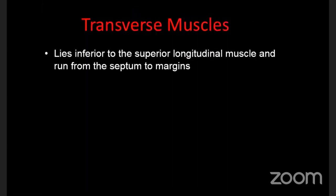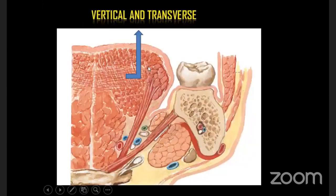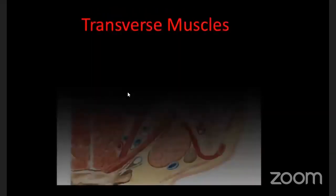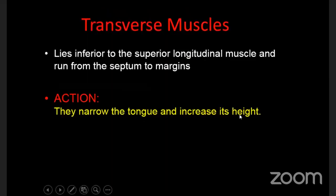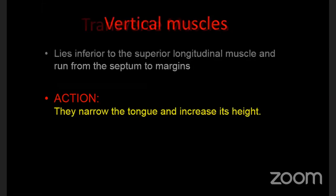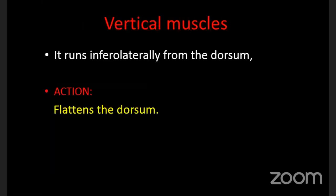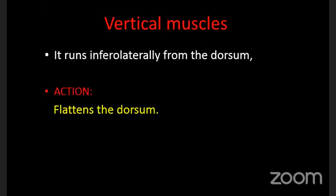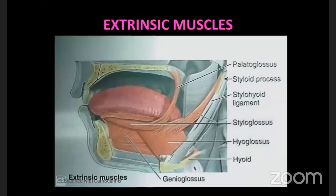When the transverse muscle contracts, it narrows the tongue and increases its height - the lateral margins are brought together, automatically narrowing the tongue and increasing its height. When the vertical muscle contracts, it brings the dorsal and ventral surfaces together, thereby flattening the tongue.